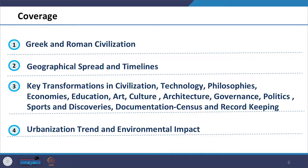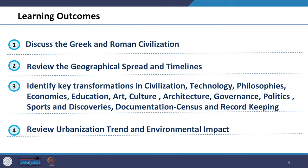We will look at key transformations in these periods and key characteristics and elements of spatial planning in these ancient cities. The learning outcomes include: after completion of this session, you should be able to discuss the period, timeline, and geographical, socio-economic and political context of these cities. You should be able to compare with the previous period and current practice, identify key transformations, and identify key elements and components of spatial planning.